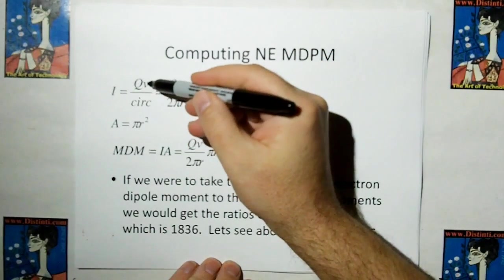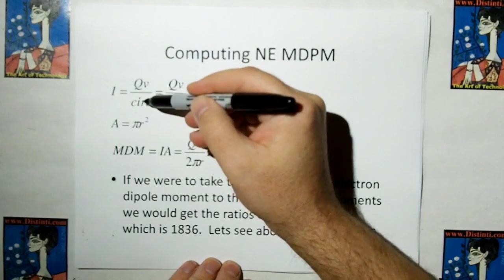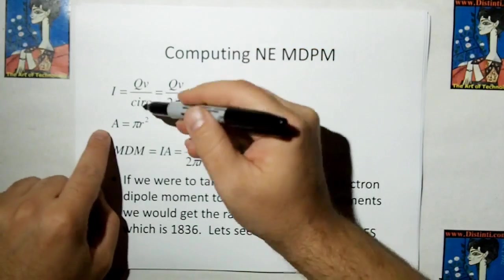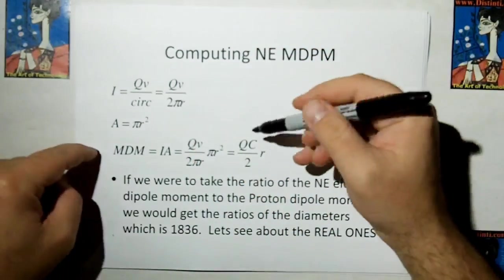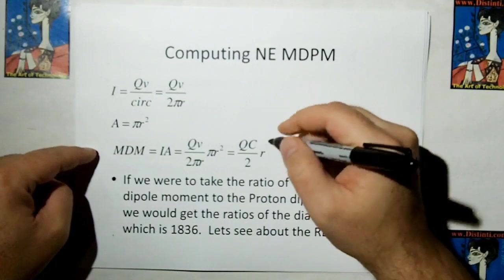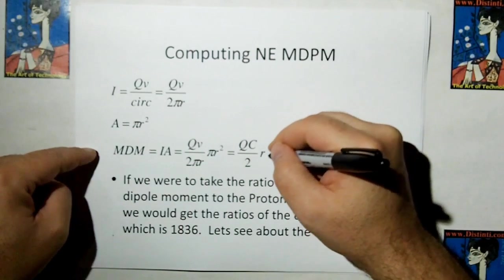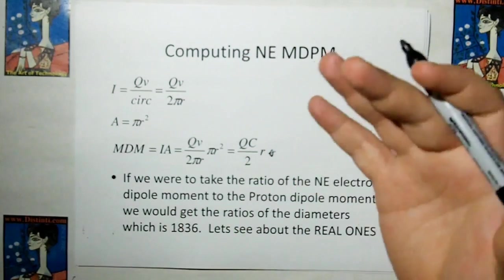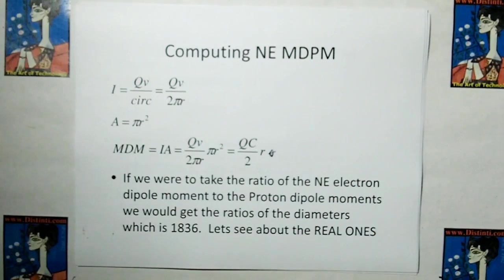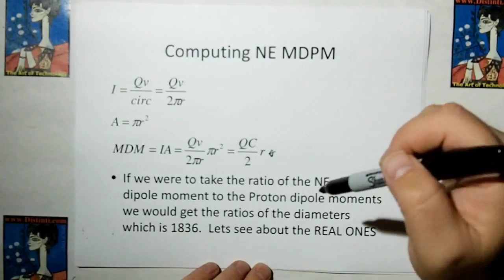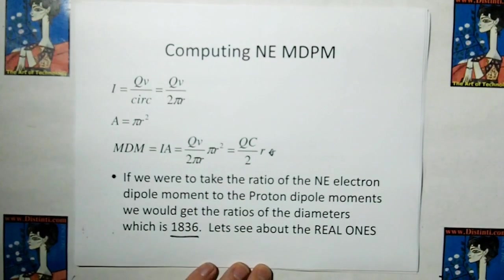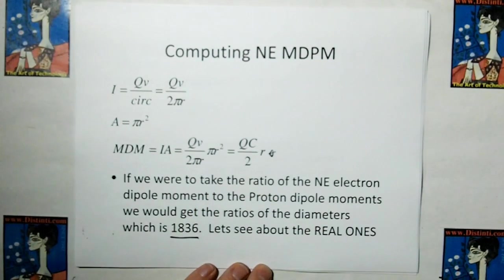Well, the I is the charge times the velocity divided by the circumference. And that would be qv over 2 pi r, where v is the speed of light, and the area is pi r squared. And if we put all that together, we get an answer of qc over 2 times r. But if we were to take the ratio of the electron to the dipole moment to the proton dipole moment, you end up back at 1836. So it shows that the magnetic moment should be proportional to the relative sizes between the electron and the proton.